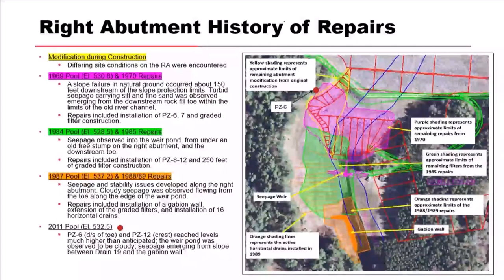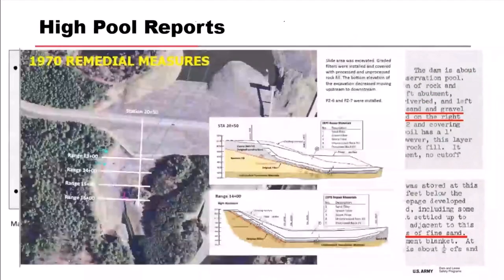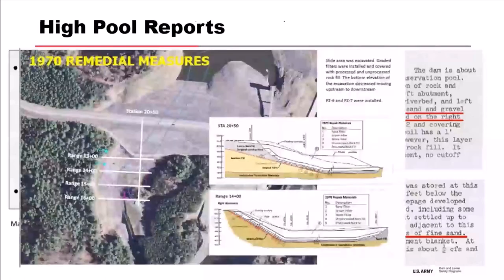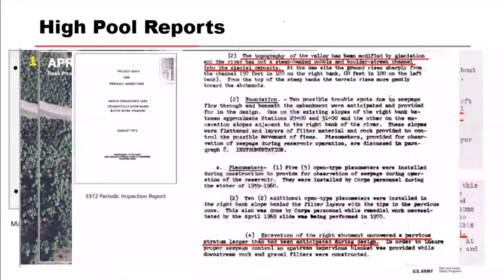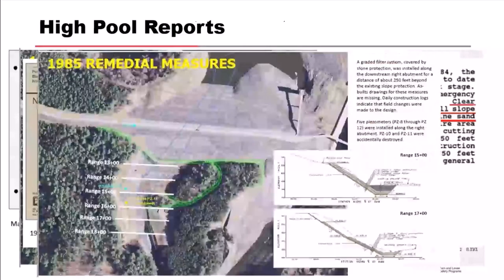In 2011, the high pool reached levels much higher than anticipated. The weir pond was observed to be cloudy — so basically we had additional discharge and particle movement during that high pool event. From high pool reports: a large lens of gravel was exposed on the right abutment; seepage removed about 30 cubic yards of fine sand, right over in the main filters. Seepage was observed on the right abutment rockfill slope adjacent to the right abutment, and deposits of medium and fine sand were observed just above the seepage pool.